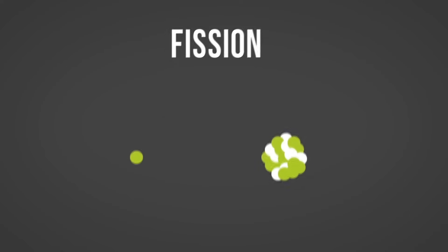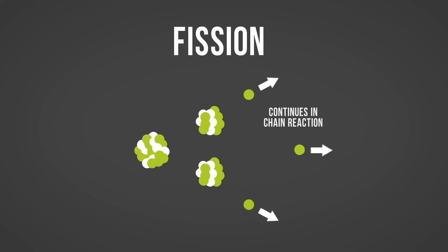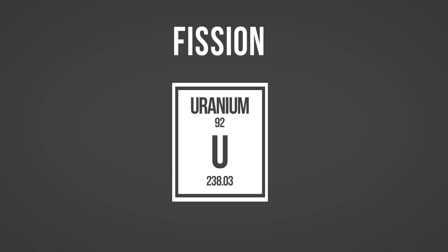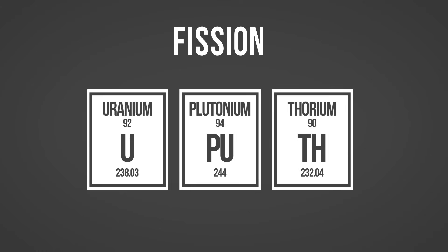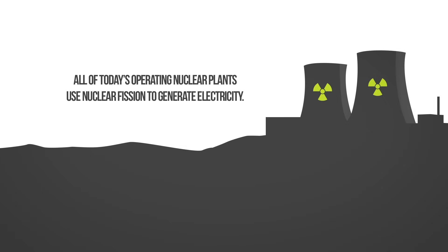Nuclear fission produces energy through the splitting of atoms, which releases heat energy that can be harnessed to produce electricity. The fuel most commonly used for nuclear fission is uranium. However, other elements such as plutonium and thorium can also be used. All of today's operating nuclear plants use nuclear fission to generate electricity.